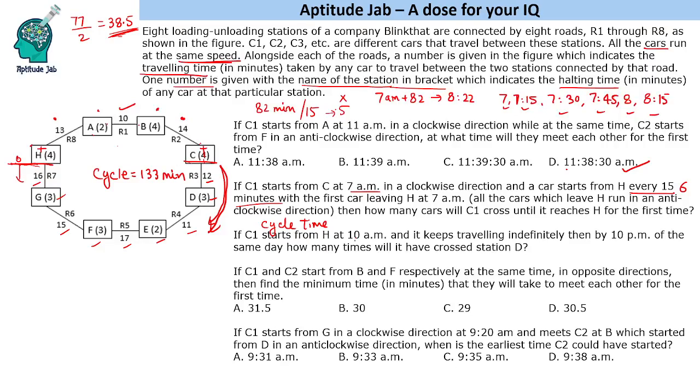The time is 10 AM to 10 PM, which is 720 minutes. 720, when you divide by 133, you get 5 complete rounds. 5 cycles means 133 into 5, which is 665. 720 minus 665 is 55 minutes. So basically it is 5 cycles plus 55 minutes.